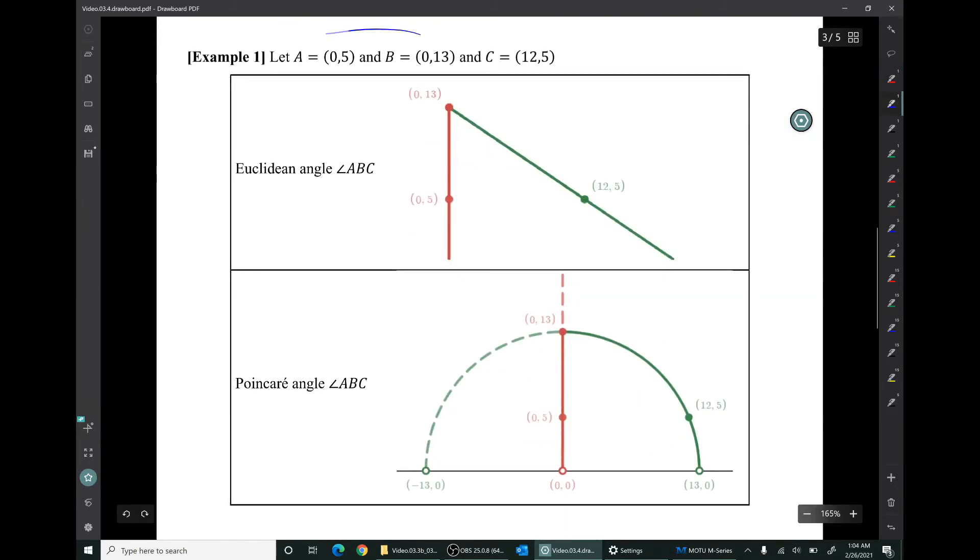So for example, let A, B, and C be those three points. You might recognize those points. Those are the same points that we used in example one of the previous video. For those three points, Euclidean angle ABC looks like this. So in this diagram, here's A, here's B, and here's C. Ray BA is this ray going down. That's a vertical ray. Ray BC is this ray. So the union of those two rays is angle ABC, Euclidean angle ABC.